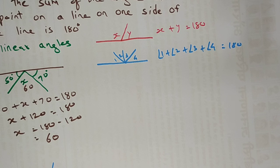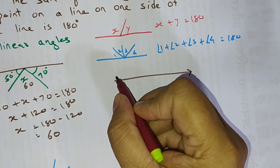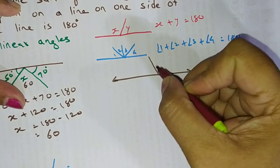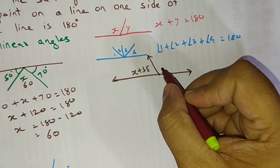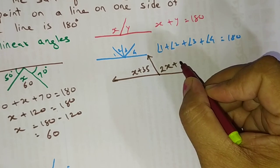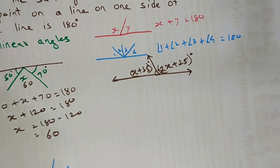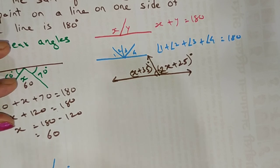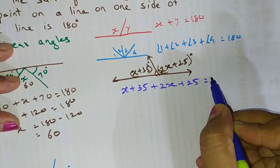Now let us try something a little bit more difficult. Here a diagram is given and in this diagram simple measurements are not given. If this is a straight line, two angles are formed: the angle on one side is x plus 35 degrees, and on the other side it is 2x plus 25 degrees. Both angles should sum up to 180 degrees according to the rule, so we write: x plus 35 plus 2x plus 25 equals 180.